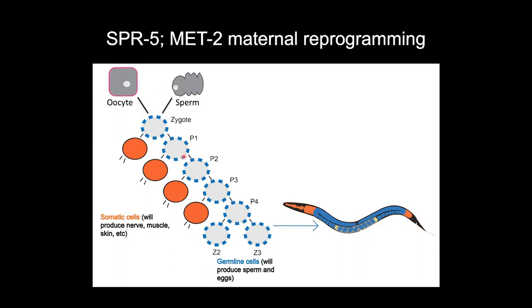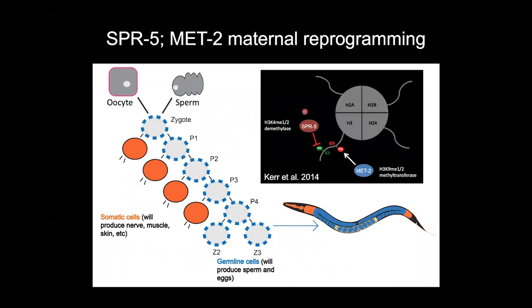So how do you get around this problem? This is what we've been studying in the CATS lab: the maternal deposition of histone-modifying enzymes SPR5 and MET2. SPR5 is an H3K4 demethylase — it removes the active mark. MET2 is an H3K9 methyltransferase that adds a repressive mark. Together, SPR5 removes the active mark and MET2 adds a repressive mark. We call this SPR5-MET2 maternal reprogramming. It resets the epigenetic landscape and closes down those open active areas at germline genes.